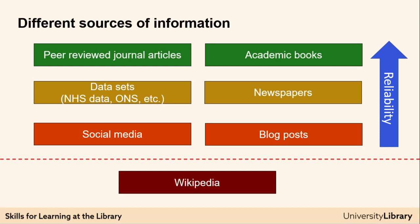However, if you are writing about a very up-to-date topic or need another perspective, then you may need to use other sources of information. Datasets can provide you with up-to-date background information for your assessment — for example, how many people aged 18 to 30 live in a particular country or area. There are a variety of datasets available through the library, such as NHS Digital or the Office for National Statistics. However, for any dataset you need to think about why the data was collected and by whom, so you are aware of any potential biases.